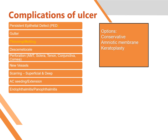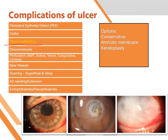Another complication is thinning or melting of the cornea. When the cornea gets thin or melted, the options are to do an amniotic membrane graft or, usually, keratoplasty if a donor cornea is available. These are the options for a thin or melting cornea.